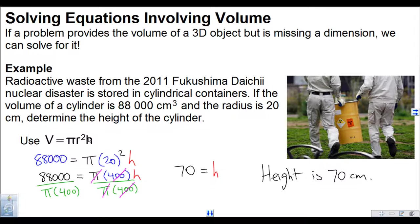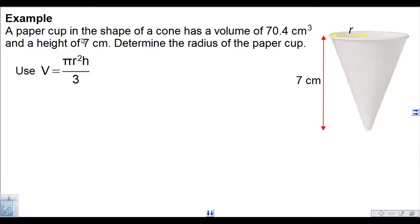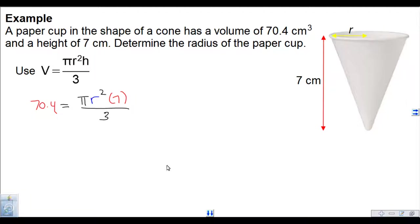For today, this volume formula we're going to use a little bit differently — we're going to be given volume, so we'll actually replace V with a value. A paper cup in the shape of a cone has a volume of 70.4 cubic centimeters and a height of 7 centimeters. Determine the radius of the paper cup. There's the formula for the volume of a cone. We replace V with 70.4, and that's equal to pi times r squared times the height, which is 7, divided by 3.